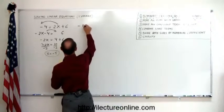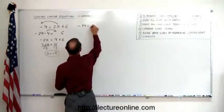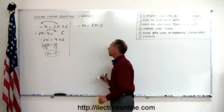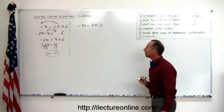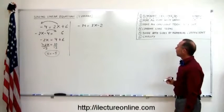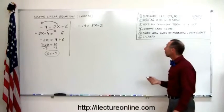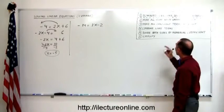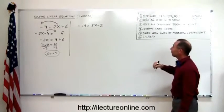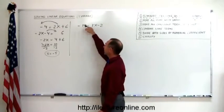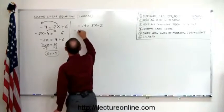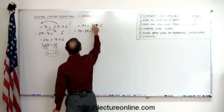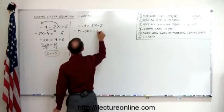Next example: minus 14 equals 3x minus 2. Again, there are no parentheses, no fractions, no decimals, so we don't have to worry about step number one. Step number two: move all the terms with the variable to the left. Here, 3x is on the right side; I move that to the left. When we cross the equal sign the sign changes, so we get minus 14 minus 3x equals minus 2.